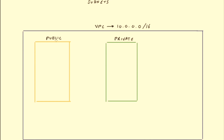Similarly, when we create a subnet we need to give it a CIDR block range. So let's say for example the public subnet is 10.0.1.0/24 — this range of addresses sits within the bigger VPC CIDR block — and the private subnet can be 10.0.2.0/24, which also sits within the bigger VPC CIDR block.